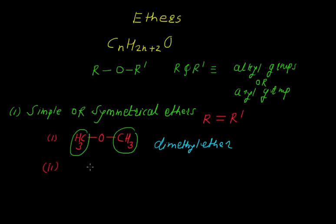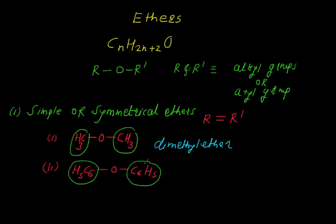Another example is C6H5-O-C6H5. In this example you can see that these two groups are the same, but they are not alkyl groups — these are aryl groups. So phenyl groups are attached to the oxygen atom. The name of this compound is diphenyl ether.